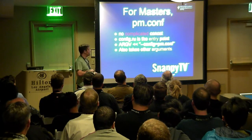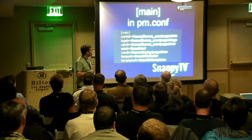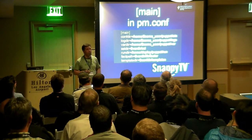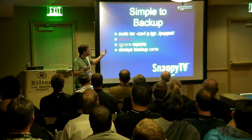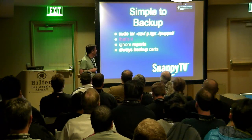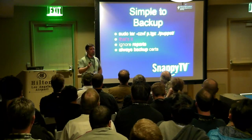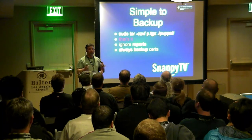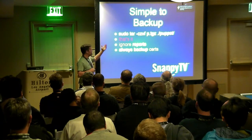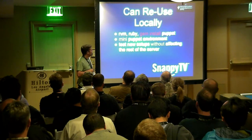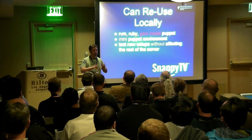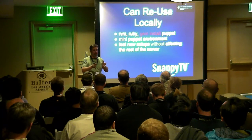My puppet master conf just tells it which home directory and config paths to use — it's nice and isolated. Go back up your certs. Ignore the reports directory in there — there are probably a lot of those. Once you get that figured out, if you want to build a local puppet master on your machine with RVM and Ruby, it's very easy using all the same configs — you'll have an instant local puppet master on your machine.